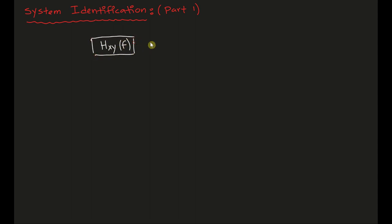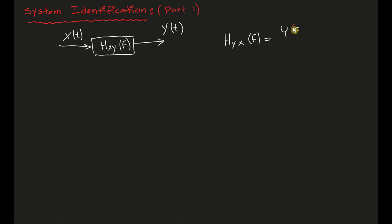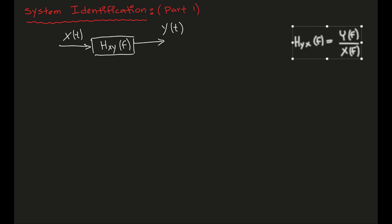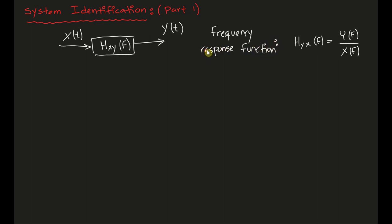To do this, I'd like to go back to the idea of the frequency response function. Here I have an FRF, H_xy of f, where f is any particular frequency. We have some input x(t) and some output y(t). The frequency response function is defined as the frequency domain manifestation of the output signal divided by that of the input signal. Going forward we'll refer to these as FRFs.